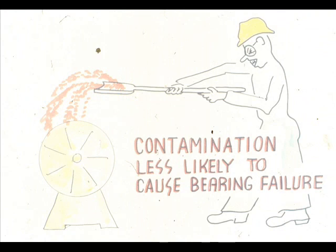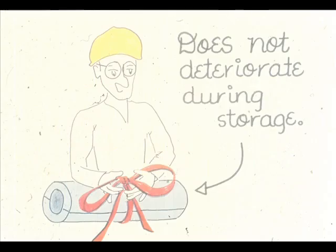Contamination, such as dirt, dust, and other foreign particles, are less likely to damage sleeve bearings than the precision rolling contact bearings. This is true because smaller particles will embed themselves in the soft bearing material, resulting in less damage to the bearing. Another advantage of sleeve bearings is that they do not require as much care in storage. Sleeve bearings may be stored just about anywhere indefinitely, with a minimal amount of deterioration. This is not true of rolling contact bearings.